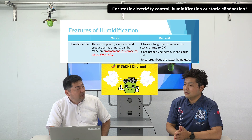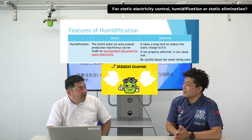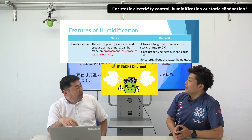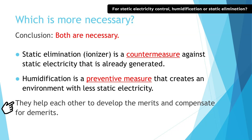Now I've just explained the features of two types: static elimination and humidification. So, in the end, the answer to your question is — we need both. Because ionizers, or static elimination, are for removing static electricity that is already generated, while humidification is a preventive measure. They help each other to develop the merits and compensate for demerits. So, static elimination and humidification do not conflict with each other, but rather they help each other.